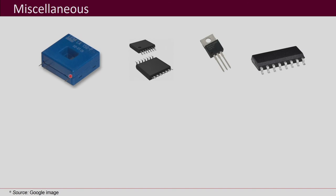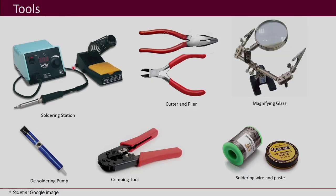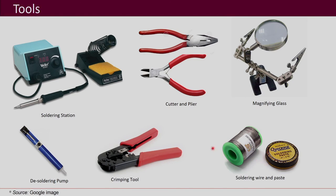Sensors such as Hall effect current sensors are also used, as well as various ICs, voltage regulators, logic gates, and other miscellaneous components in power converters. The tools you require include a soldering station, a desoldering pump for mistakes, cutters, pliers, crimping tools, magnifying glasses for SMT components, and soldering wire and paste.